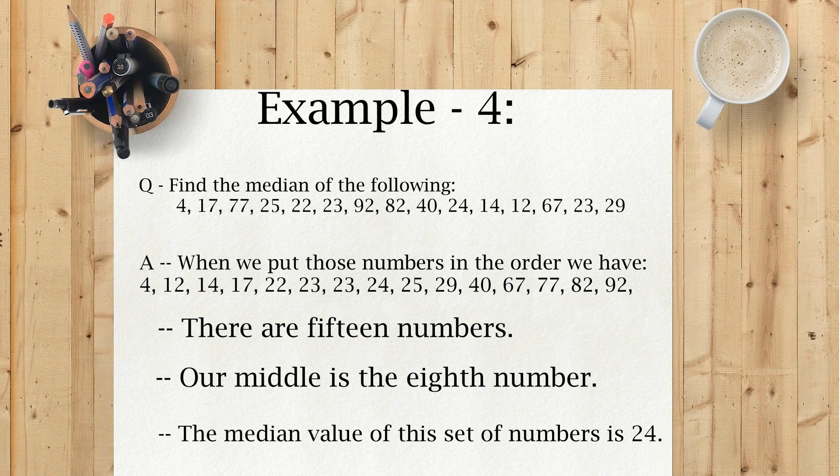When we put those numbers in order we have: 4, 12, 14, 17, 22, 23, 23, 24, 25, 29, 40, 67, 77, 82, 92.